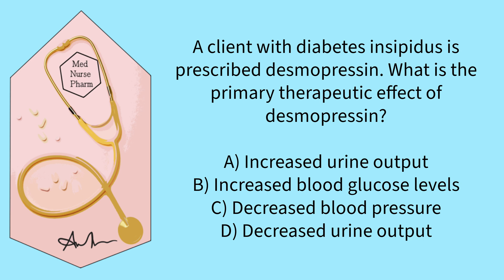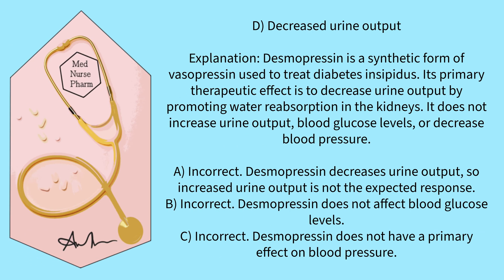A client with diabetes insipidus is prescribed desmopressin. What is the primary therapeutic effect of desmopressin? A) Increased urine output, B) increased blood glucose levels, C) decreased blood pressure, D) decreased urine output. Pause the video and select your answer. The correct answer is D. Decreased urine output.